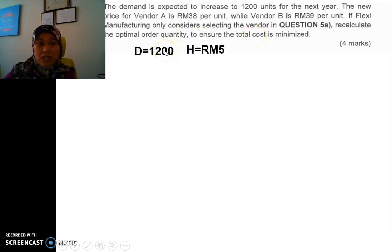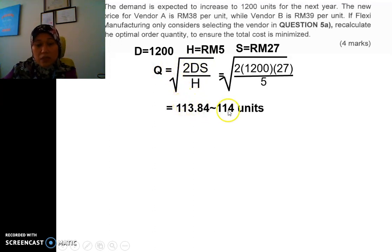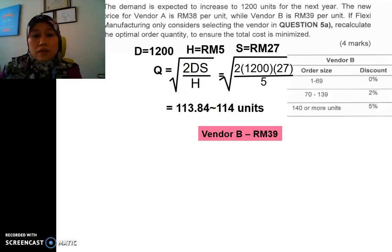For this case, the D has been changed. H is still RM5 ringgit. S is the same. And again, we need to calculate, pre-calculate the Q because the D has been changed. So the D now should be 114 units. So we need to test with the vendor B. These are the order size. So now it becomes 114. So for the first one, it's not even in the range. So it's not valid. And we don't need to calculate the total cost.